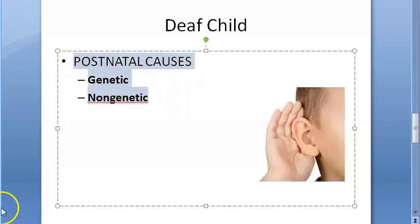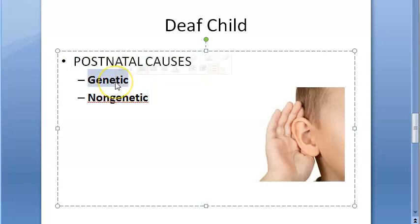Now postnatal causes, divided into genetic and non-genetic. Genetic causes manifest later in childhood or adult life — the condition originates prenatally but deafness manifests later. Examples include Alport syndrome, Klippel-Feil syndrome, Hurler syndrome, and others.